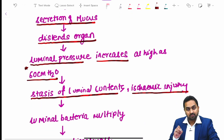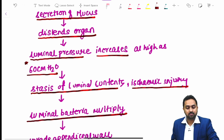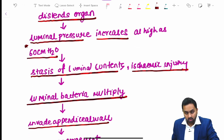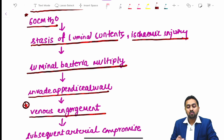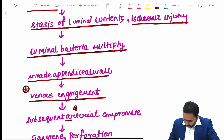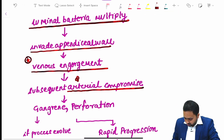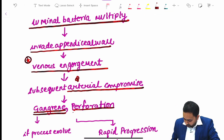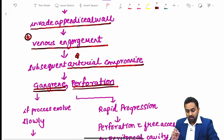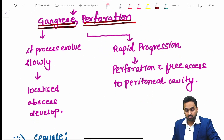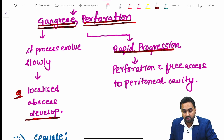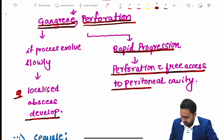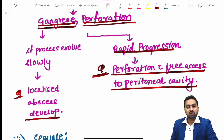Because of the increased pressure there is stasis of luminal contents and ischemic injury. Luminal bacteria multiply and invade the appendiceal wall, resulting in venous engorgement, then arterial compromise leading to gangrene or perforation. This is the pathophysiology of acute appendicitis.